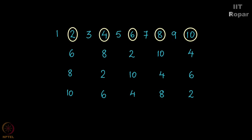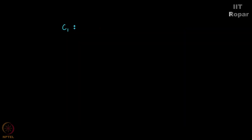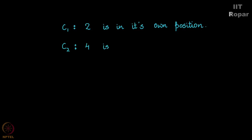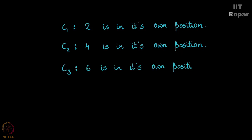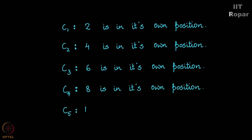Now let us start writing down the conditions. Condition 1 is: 2 is in its own position. Condition 2 is: 4 is in its own position. Condition 3 is: 6 is in its own position. Condition 4 is: 8 is in its own position. And condition 5 is: 10 is in its own position. These are the 5 conditions.